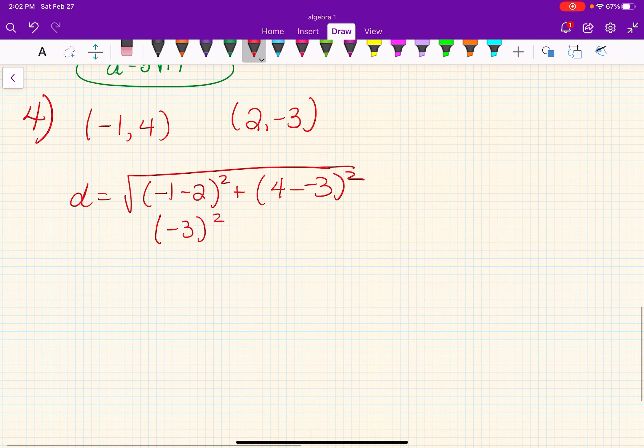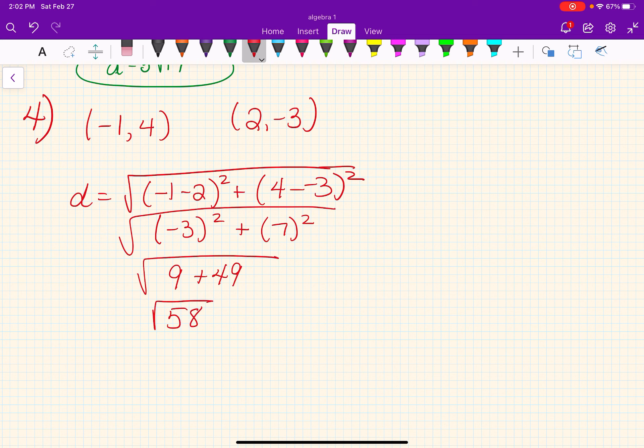So this would be negative 3 squared. And this would be 7 squared. And so you end up with 9 plus 49. Square root it. And then my final answer is the square root of 58. And that's it.